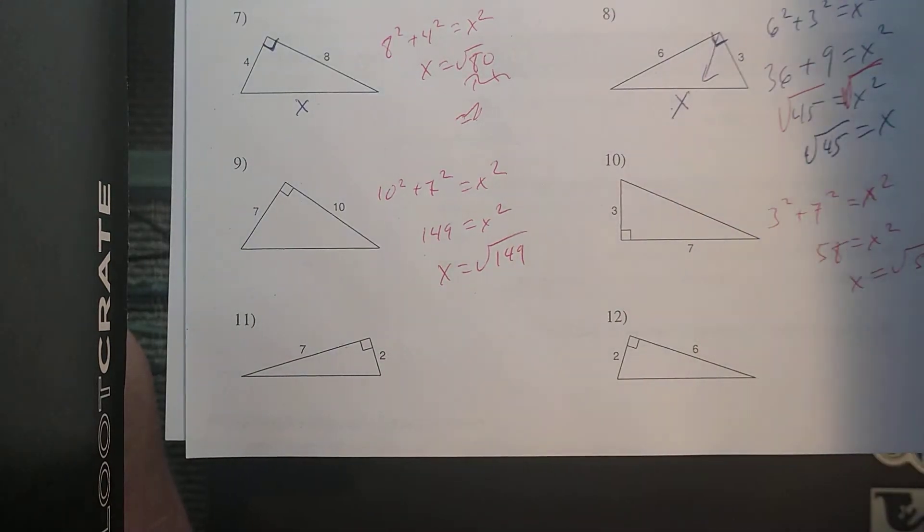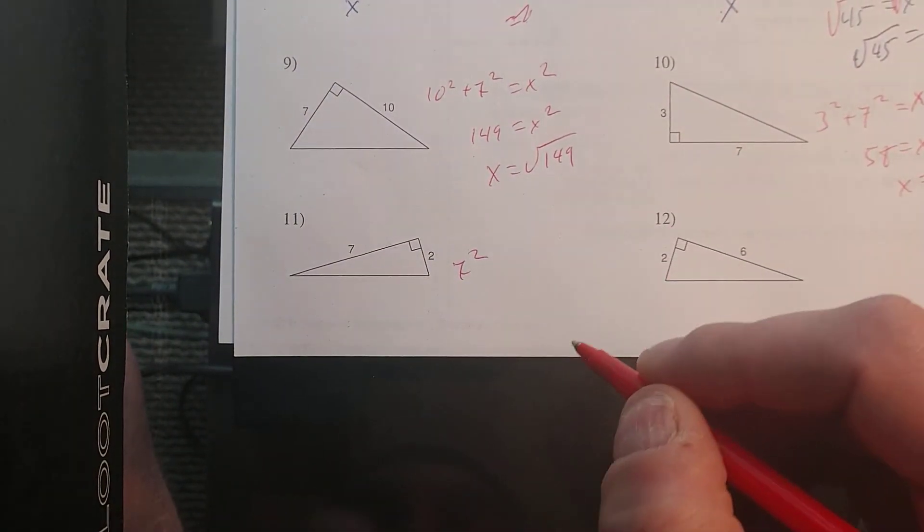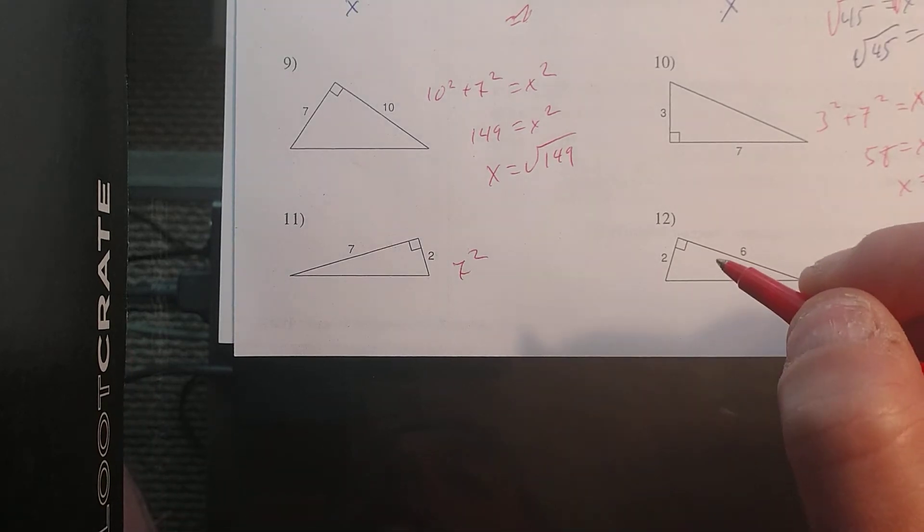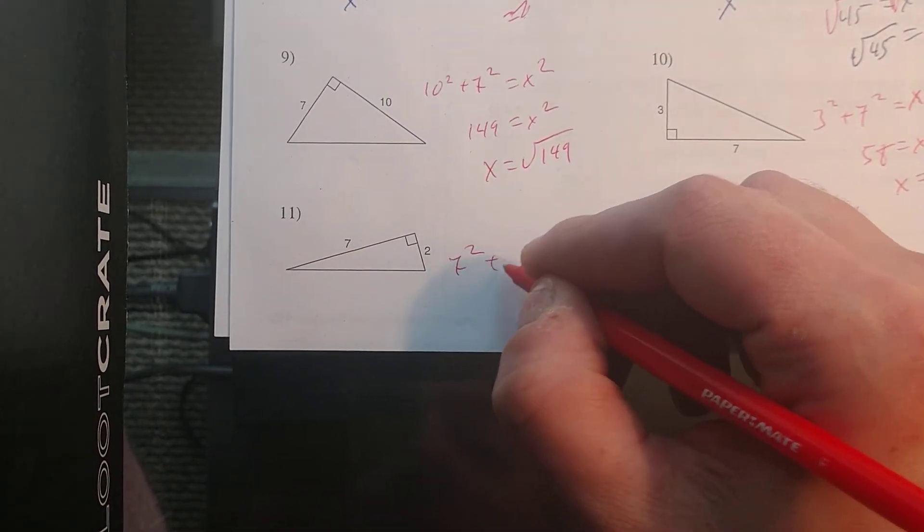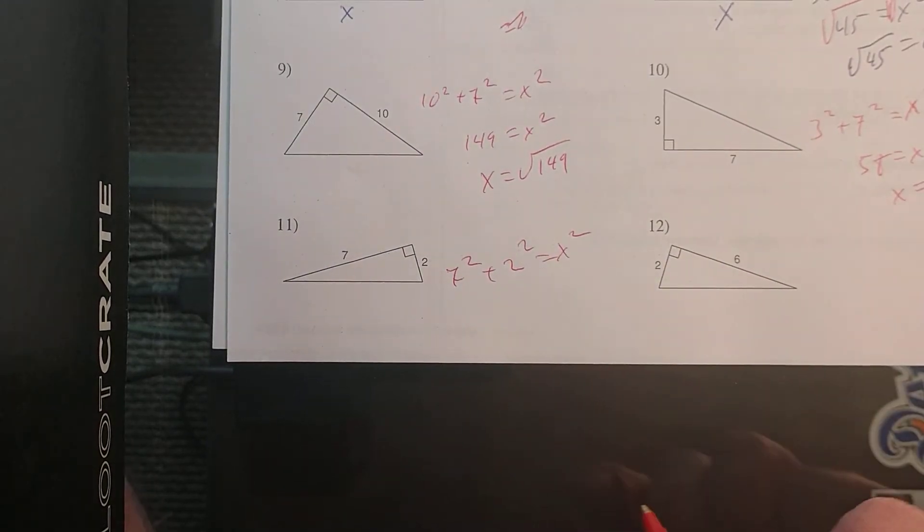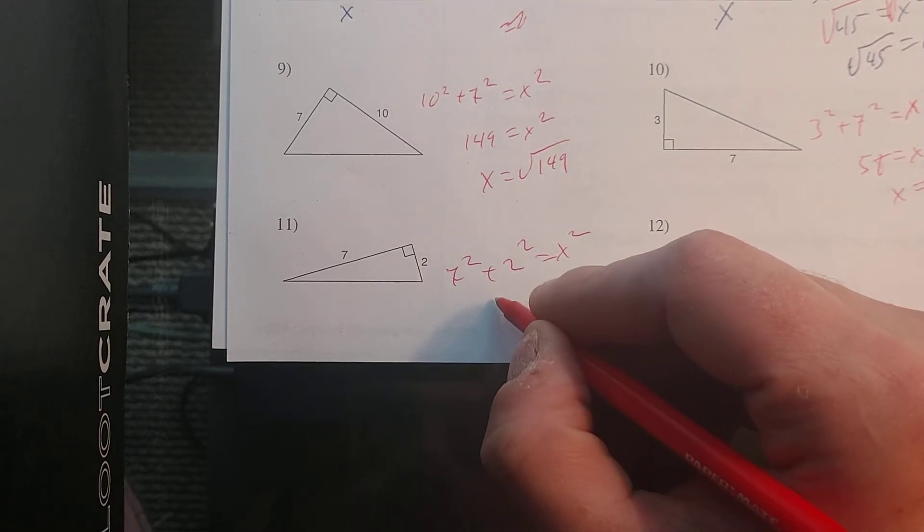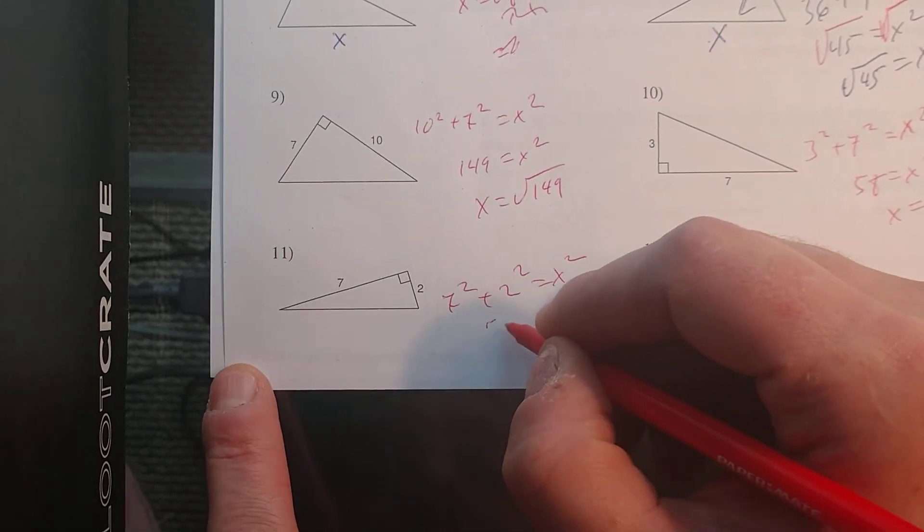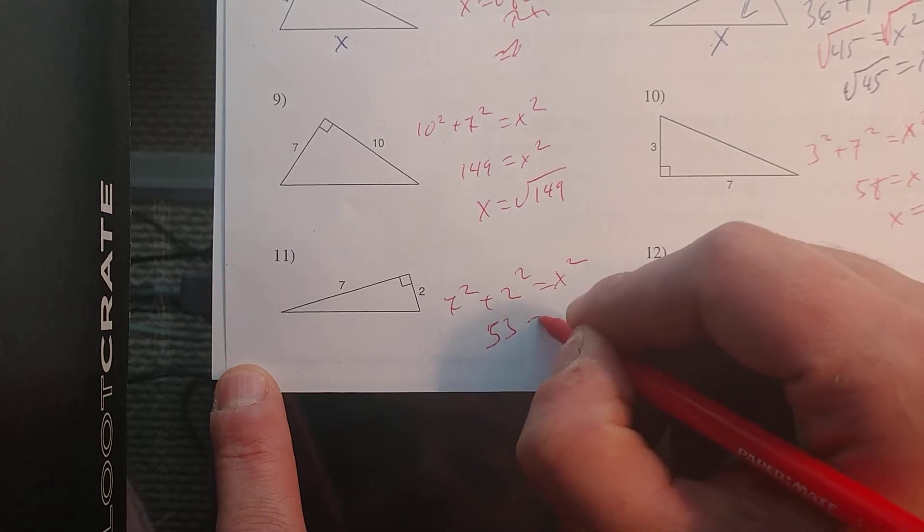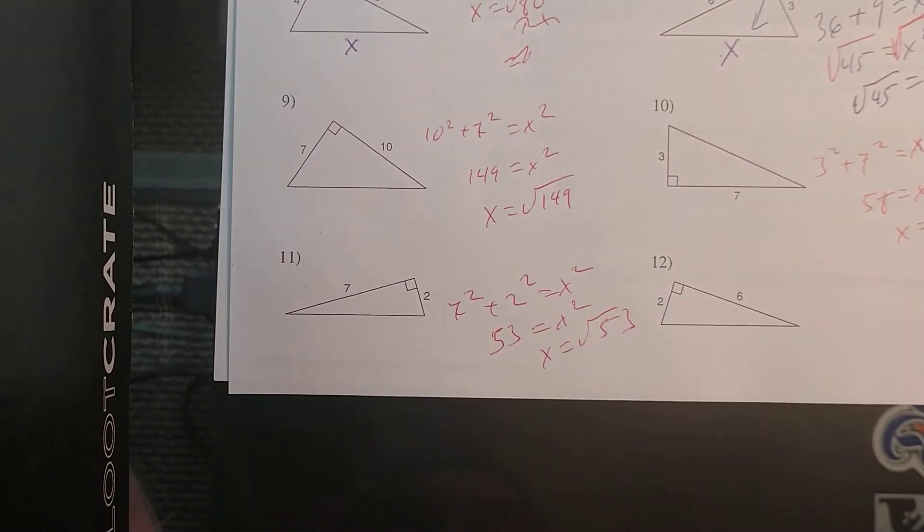And the last two down here, I'm going to have 7² plus 2² = X². 7² is 49, 2² is 4. 49 and 4 is 53 = X². So X is the square root of 53.